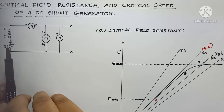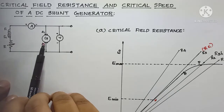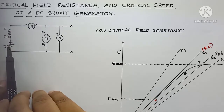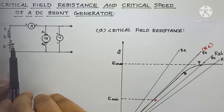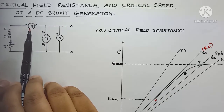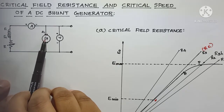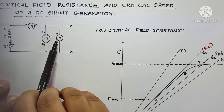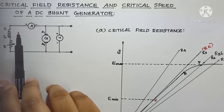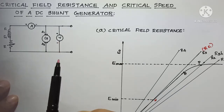Here you can see the field windings F1 and F2, which are excited from the generator itself. The current flowing through this field winding can be controlled by using this variable rheostat, and the current IF can be measured by using this ammeter connected in series with the field and the armature of the generator.